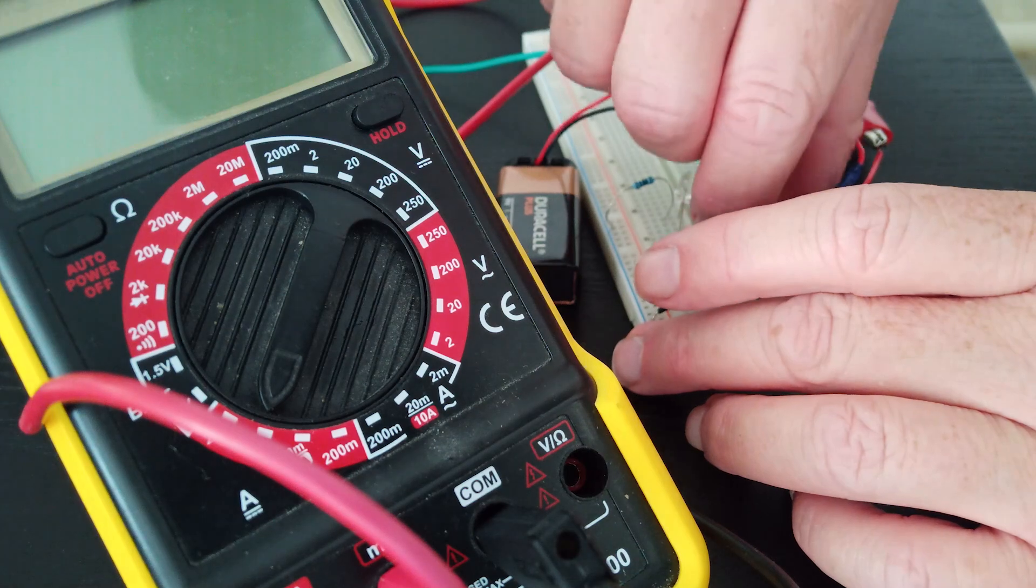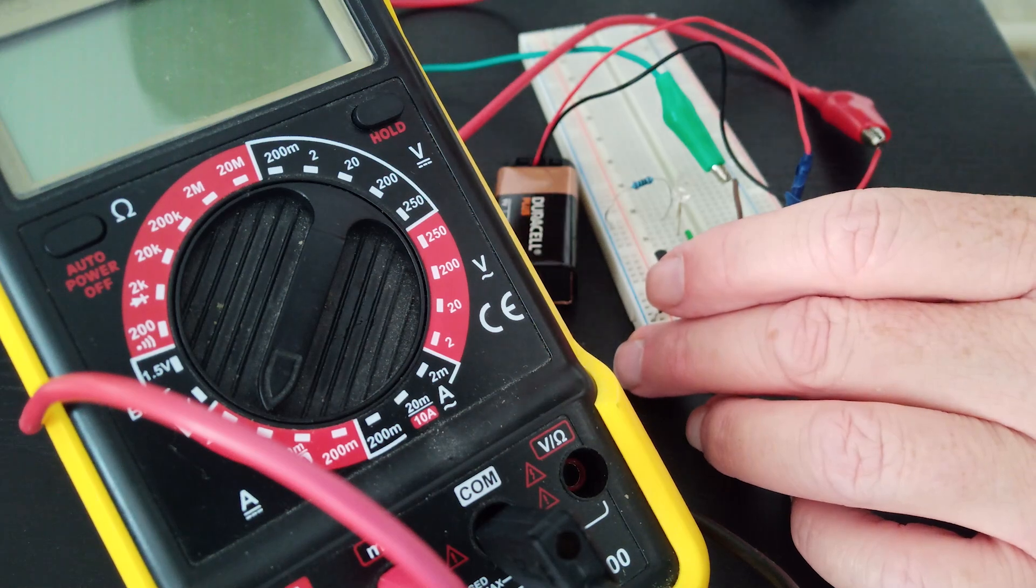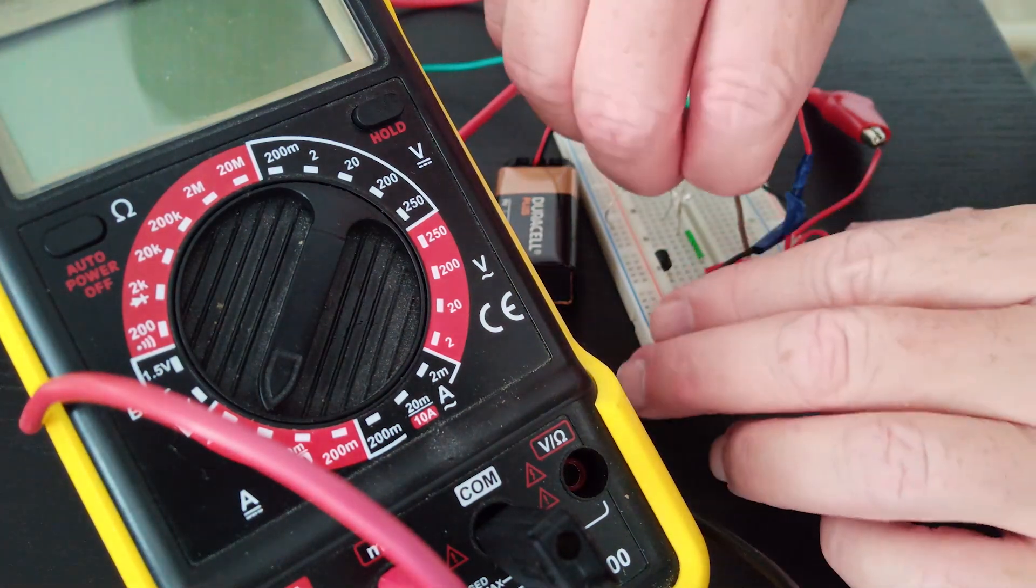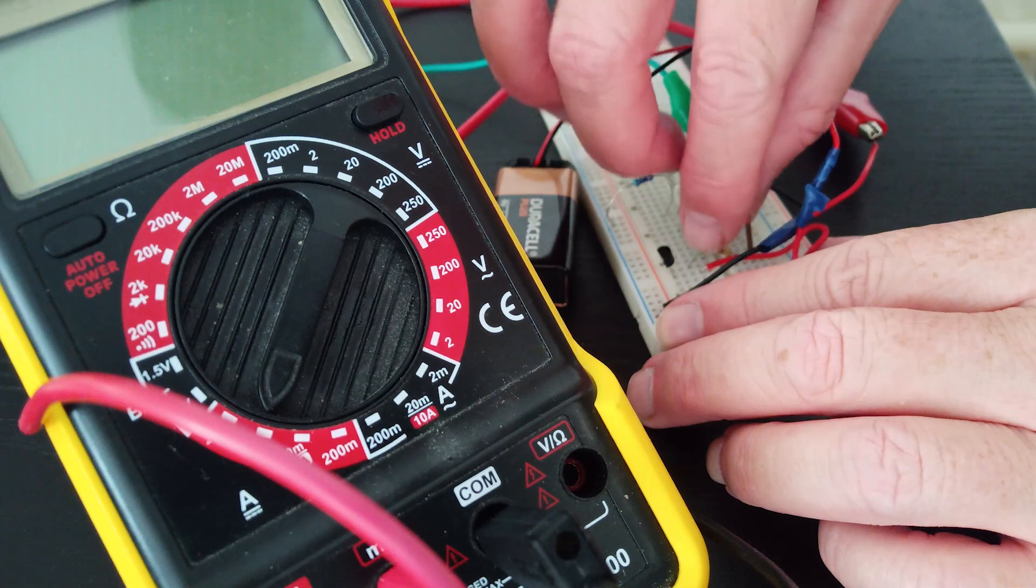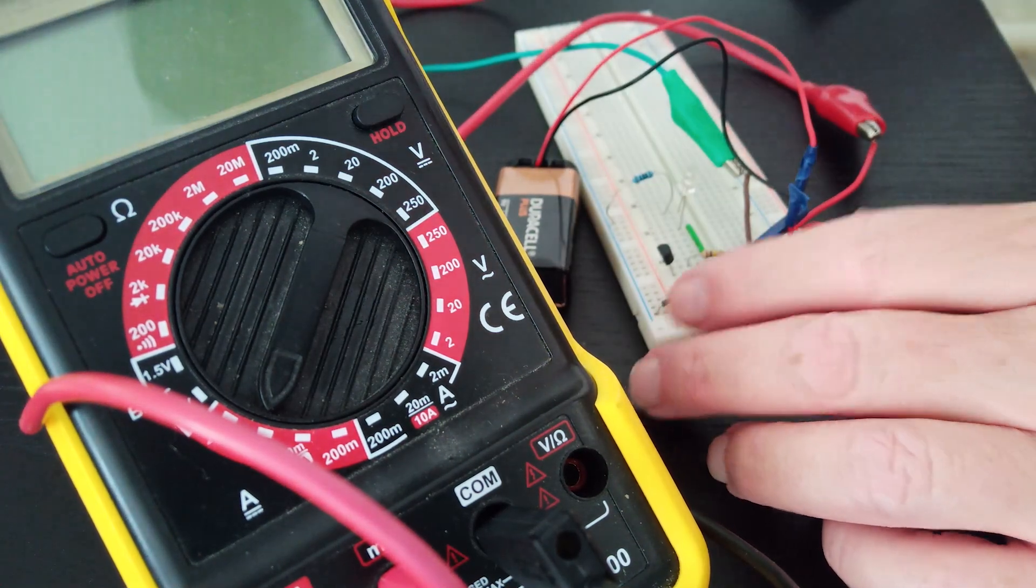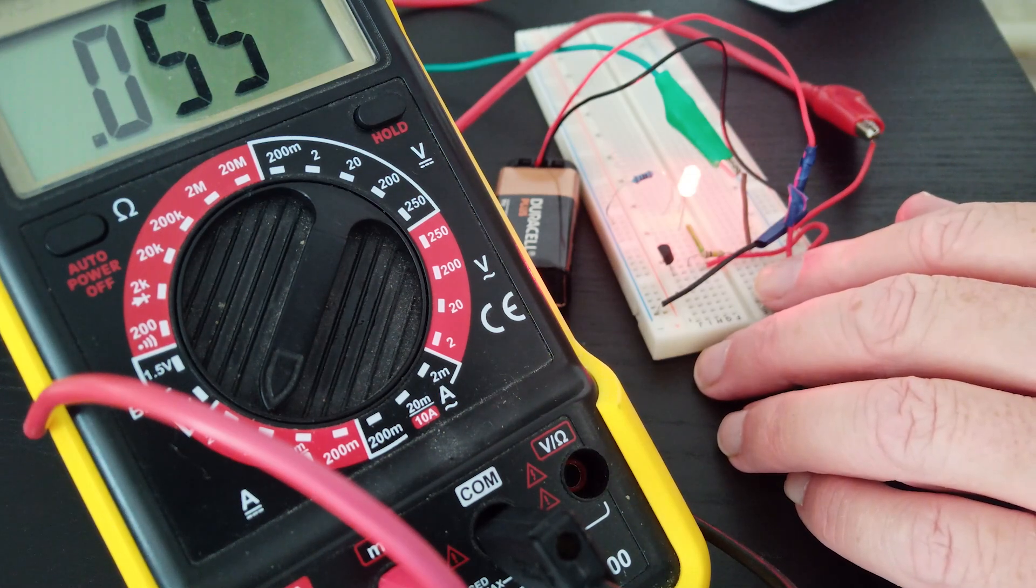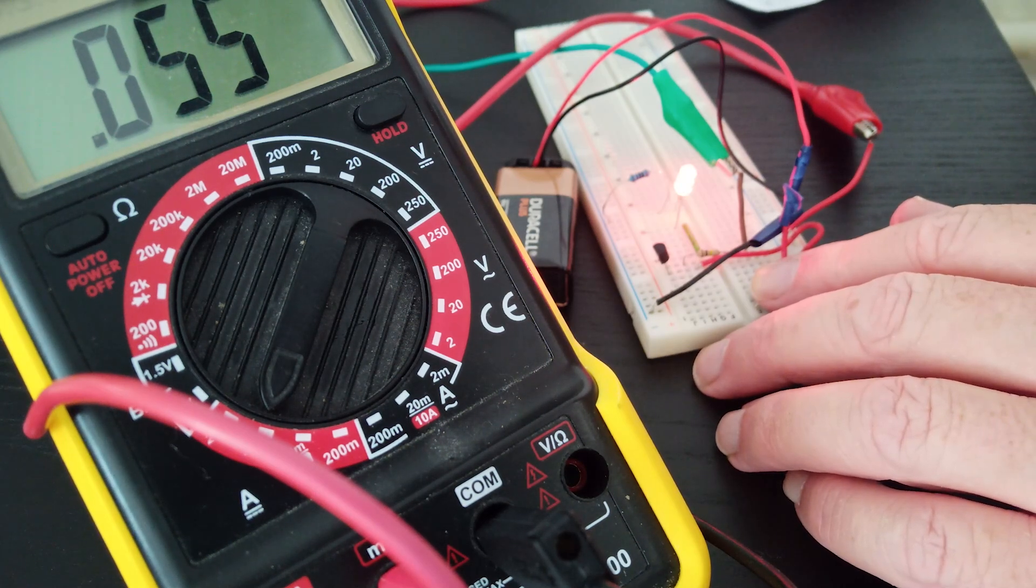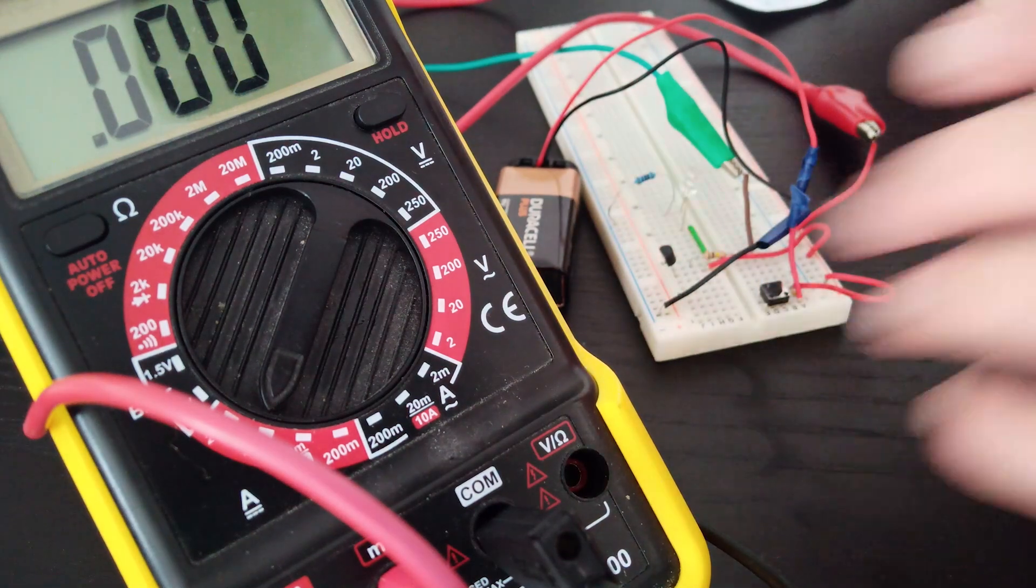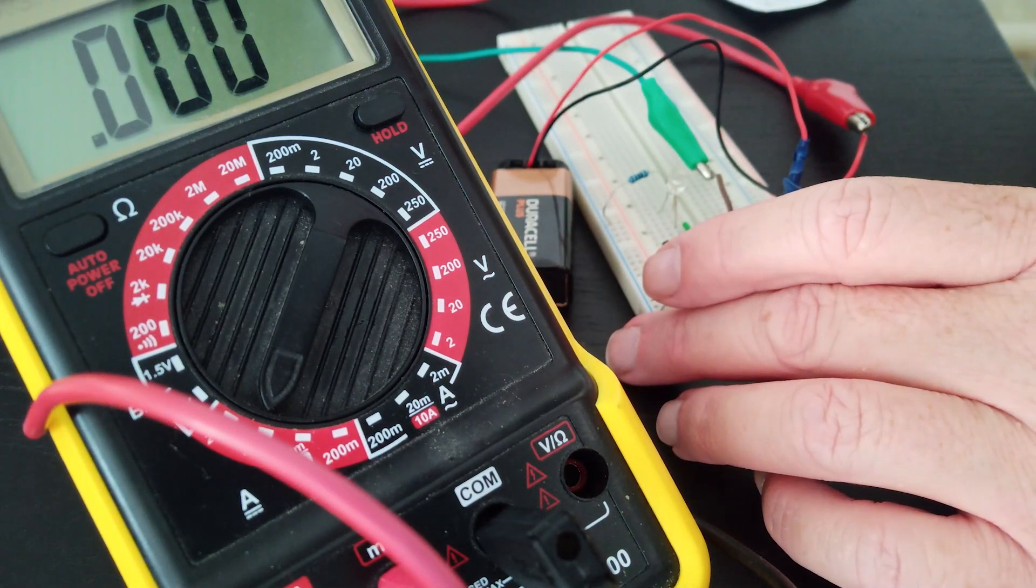So let's now substitute the 33k resistor for the original 100k. Just pop that in there. Okay, and let me just reset the meter and let's see what we get with that. That's giving us 0.055 milliamps.